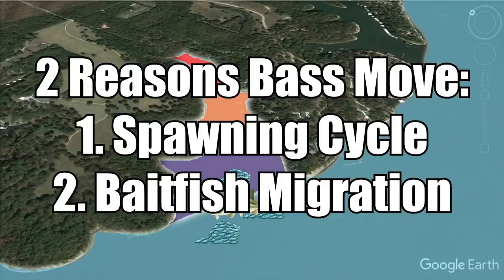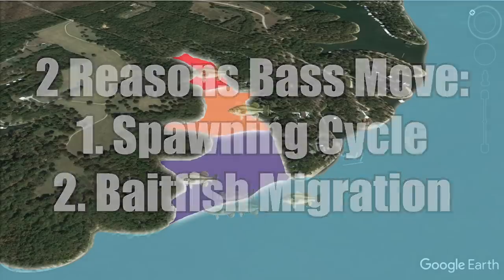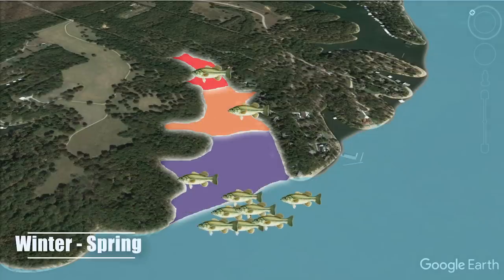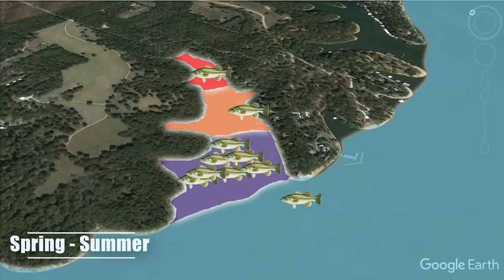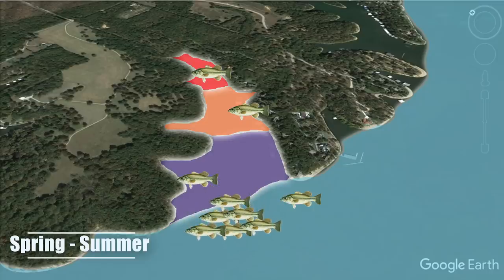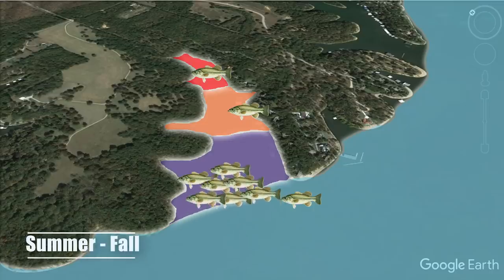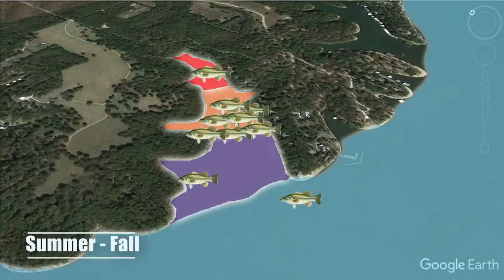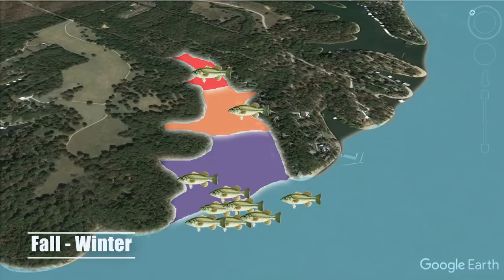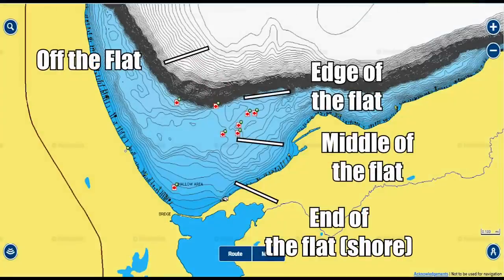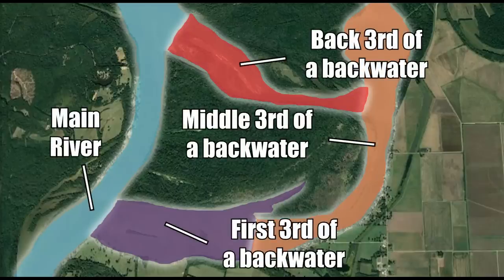Bass migrate for two main reasons: to move into shallow water to spawn, or to follow the baitfish. So a percentage of bass will move from the main lake into creeks in spring, pull back to the main lake after the spawn, push back into creeks in fall as water temps drop, and then pull out again in winter. These concepts apply to other fishery types — natural lakes, river systems — with some nuances. The forage may differ (perch instead of shad, for example), but the same framework applies.